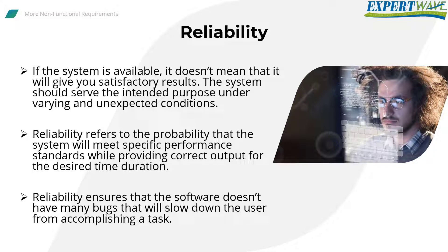Microsoft Windows is known to have many bugs, but we still say it is reliable. Despite the number of bugs Windows has, I can still perform actions and get results. Reliability is not the same thing as availability, but goes hand-in-hand with availability. Using the delivery service example: you can call the delivery hotline, but they put you on hold for hours, you can't hear them well, or they put in a wrong order. In that case, the system can be available but not reliable.